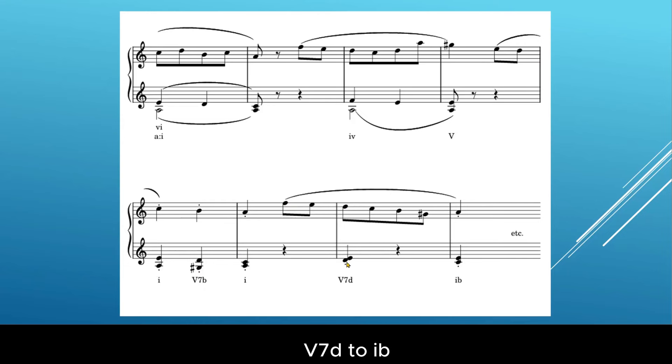Then go to the final cadence, is five-seven D to one B, B G sharp B D. And here C is the passing note. At the end is the first inversion of A minor chord, one B.